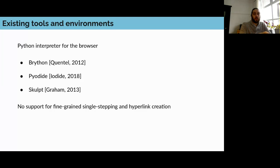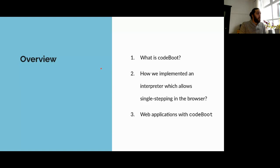At that point we knew we had to implement our own environment. We looked at which Python interpreter to use in the browser — Brython, Pyodide, and Skulpt were the three most mature options — but none of them support fine-grained single stepping or snapshots of specific execution points shareable through a hyperlink. This talk will cover what CodeBoot is, how we implemented that fine-grained single stepping, and examples of web applications you can build with CodeBoot.